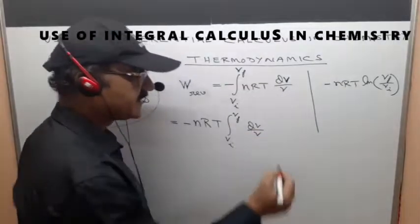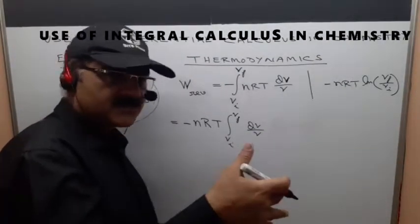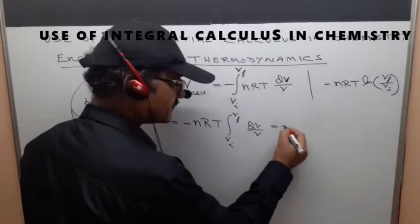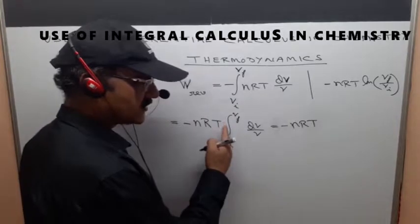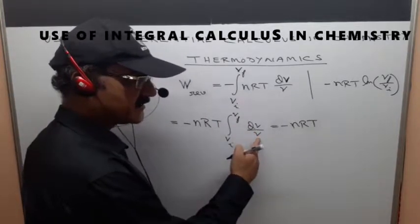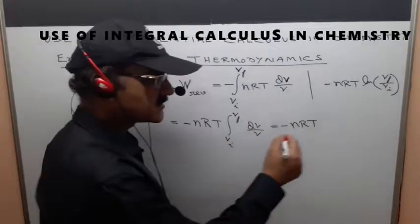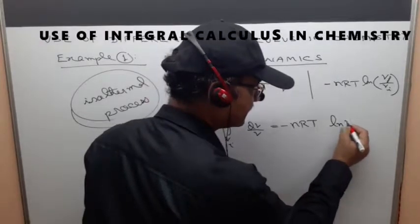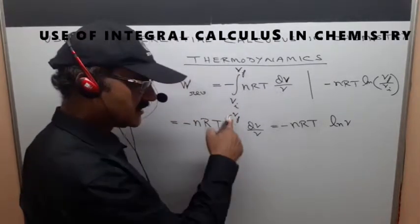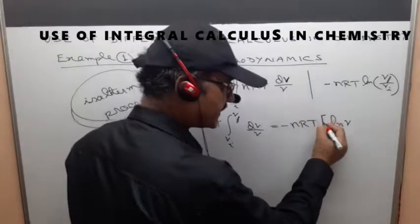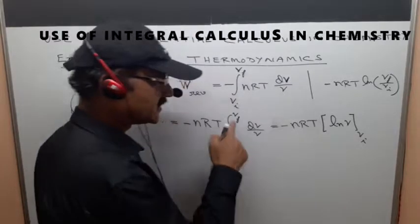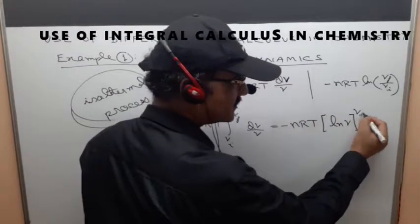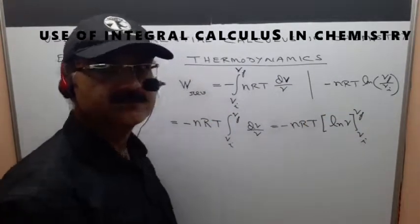So in this class let me teach you how we can get this by integrating dv by v. Now the next step is, these are constants, integration of dv by v, so this gives us ln v. Definite integration so square bracket lower limit comes here upper limit goes there right.